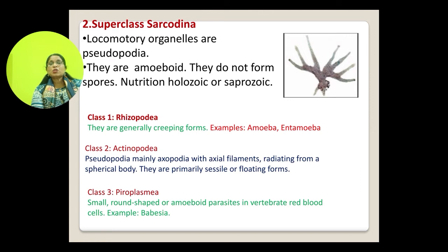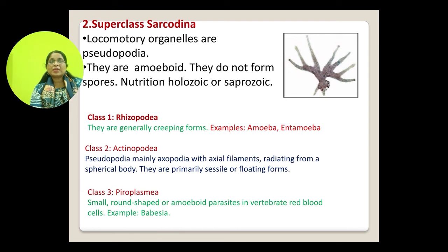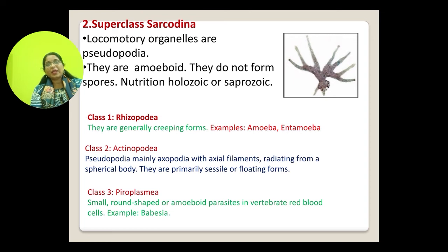Superclass Sarcodina: locomotory organelles are pseudopodia — the classic example being Amoeba. It has three classes: Rhizopoda, Actinopoda, and Pyroplasma. Under Rhizopoda, you will study Amoeba and Entamoeba.